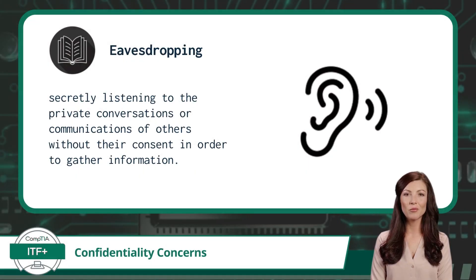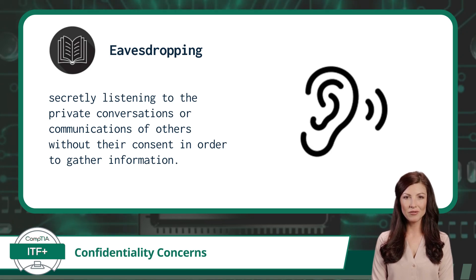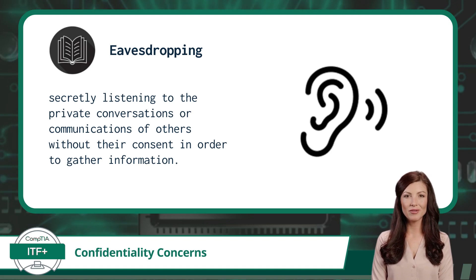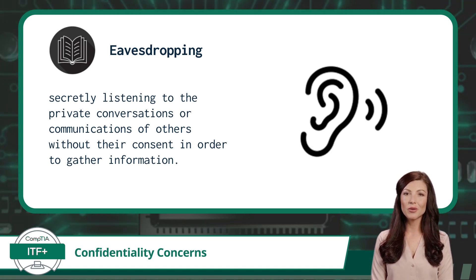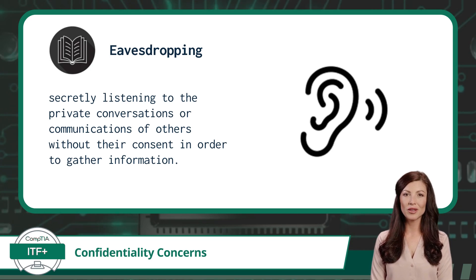Next up, we have eavesdropping. This is a specific form of snooping that involves secretly listening to the private conversations or communications of others, without their consent, in order to gather information. This could be a telephone conversation or a network connection between devices.